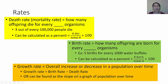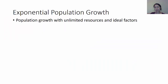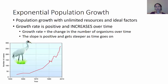The growth rate tells you overall what's happening — how many are added versus how many leave. Or you can find it as the slope on a graph of a population over time. This is going to come in handy when we talk about the two types of population growth. The first is known as exponential population growth — population growth with unlimited resources and ideal factors.